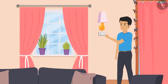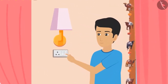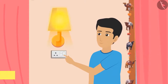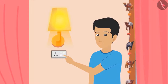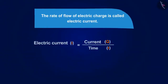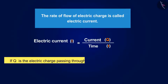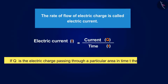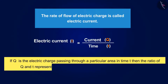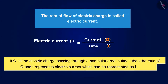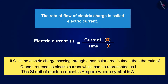If everything that flows has current, what will we call the current that glows the bulb when you put on the switch? We call it electric current. The rate of flow of electric charge is called electric current. If Q is the electric charge passing through a particular area in time T, then the ratio of Q and T represents electric current, which can be represented as I. The SI unit of electric current is ampere, whose symbol is A.